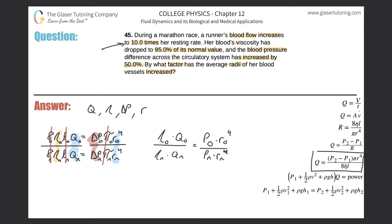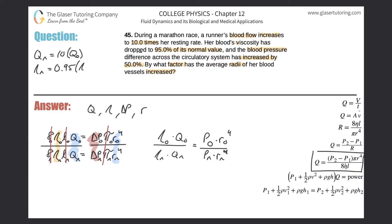Now I'll translate the problem's words into equations. First: the runner's blood flow increases to 10 times her resting rate, so Q_new equals 10 times Q_old. Second: the blood's viscosity has dropped to 95 percent of its normal value, so eta_new equals 0.95 times eta_old.